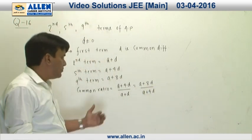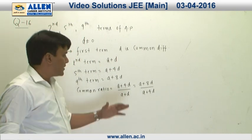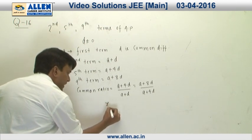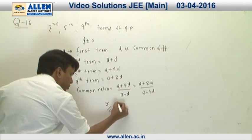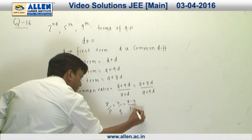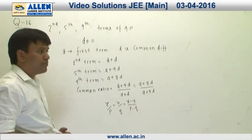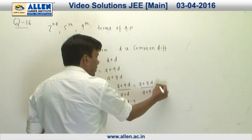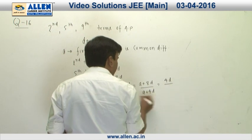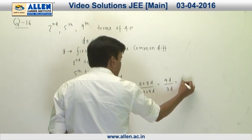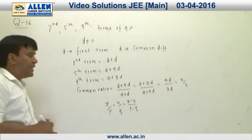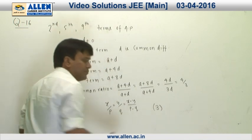One method is we can multiply and get a relation in A or D. Or second, we can use the concept of ratio and proportion. If X upon P equals Y upon Q, this is same as X minus Y upon P minus Q. Using this formula, we get 4D upon 3D. Since D is non-zero, the common ratio of this GP is going to be 4 upon 3. Hence the answer for this question is going to be 3.